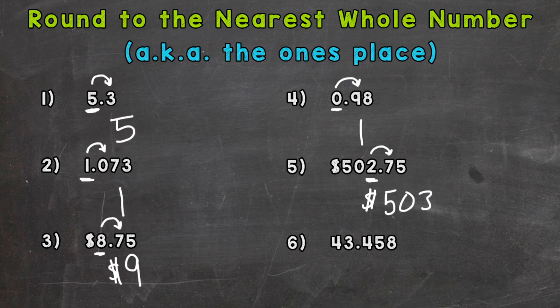Lastly, number six. We have forty-three and four hundred fifty-eight thousandths. Underline the ones, and we need to see if this number is closer to forty-three or if it's going to round up to forty-four. Four or less, let it rest. We underline the ones digit, look next door, and that four says stay the same. So that number is going to round to forty-three.